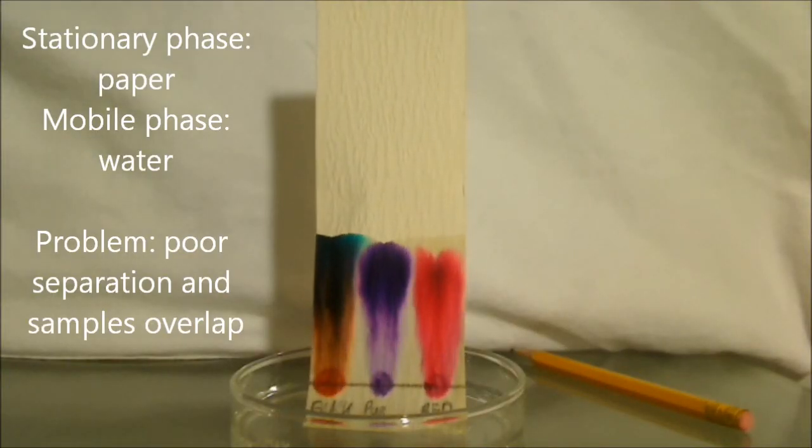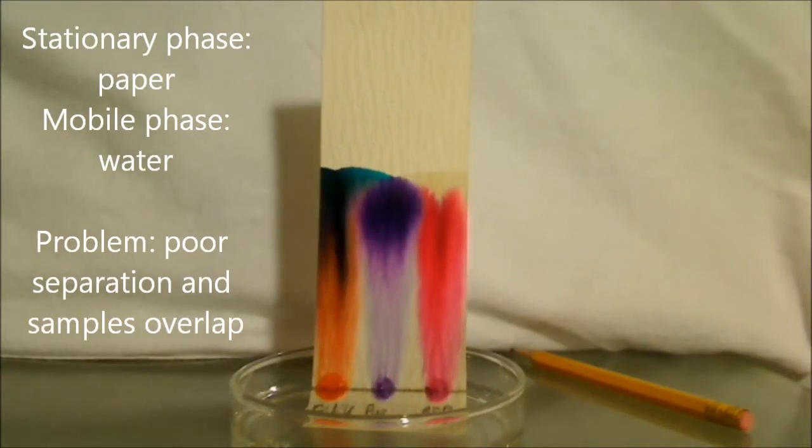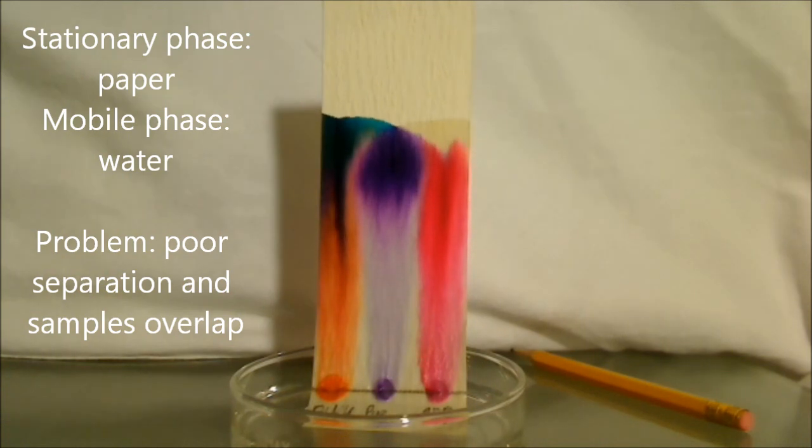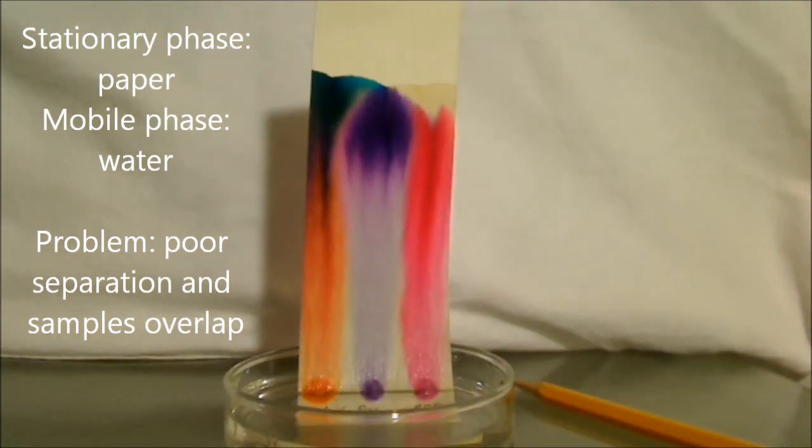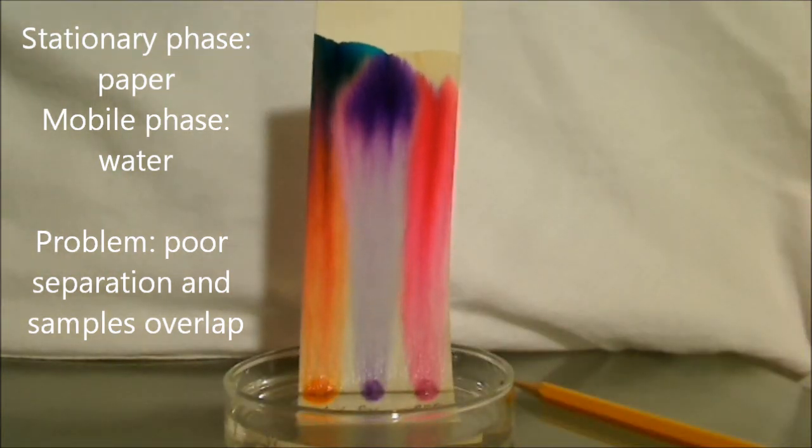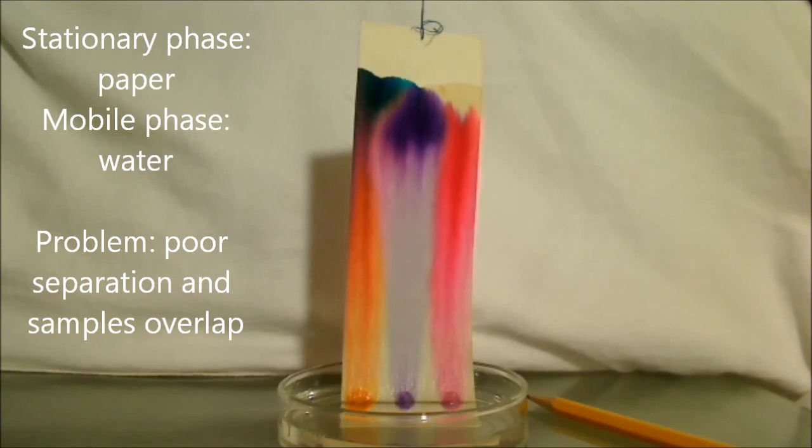So it's not so easy to do this. Let's look at some bloopers. In this case, the inks are starting to overlap. That's one problem. And the second problem is that pretty much all the ink is going up all the way. There's not very good separation into different spots.